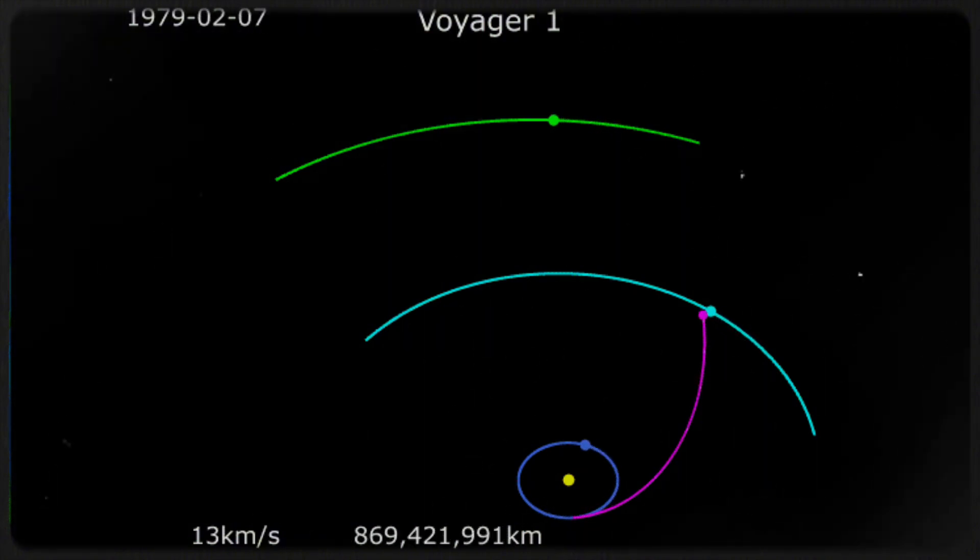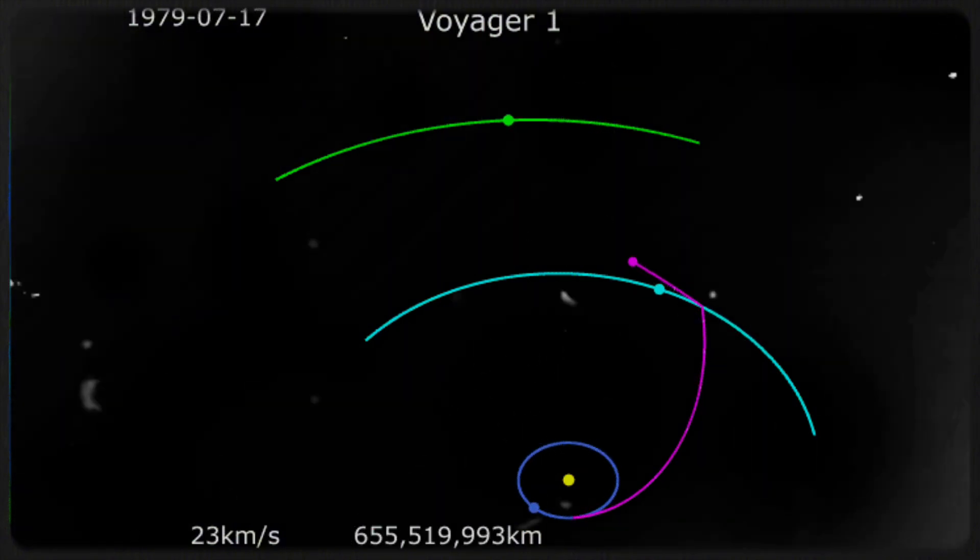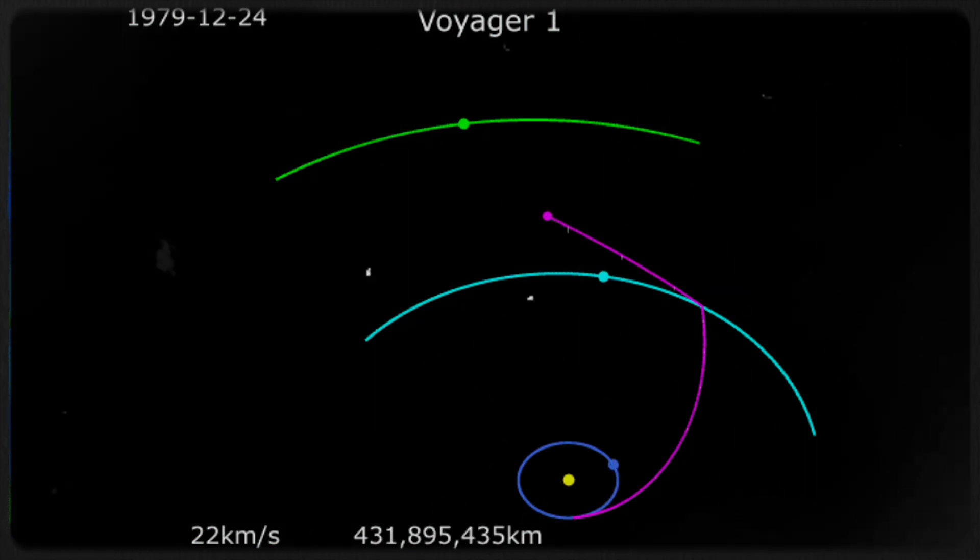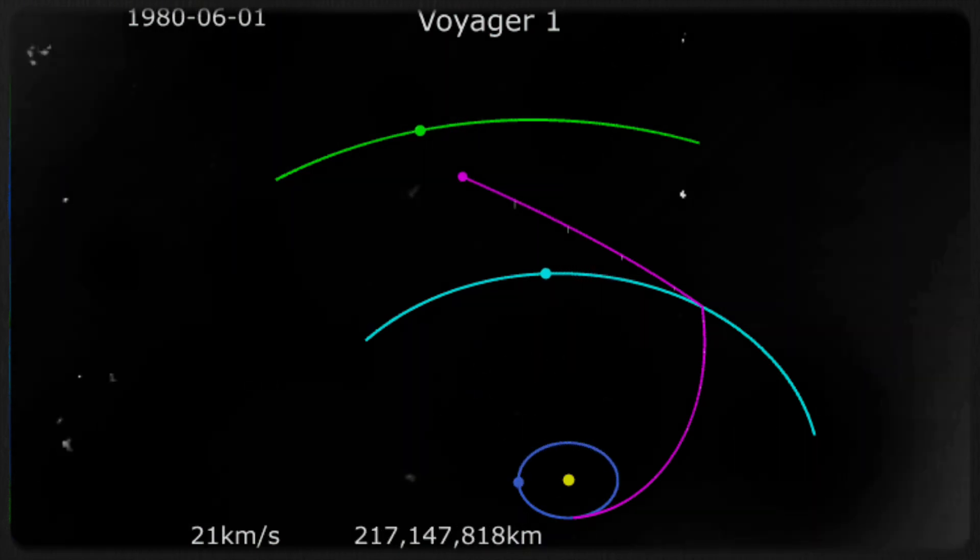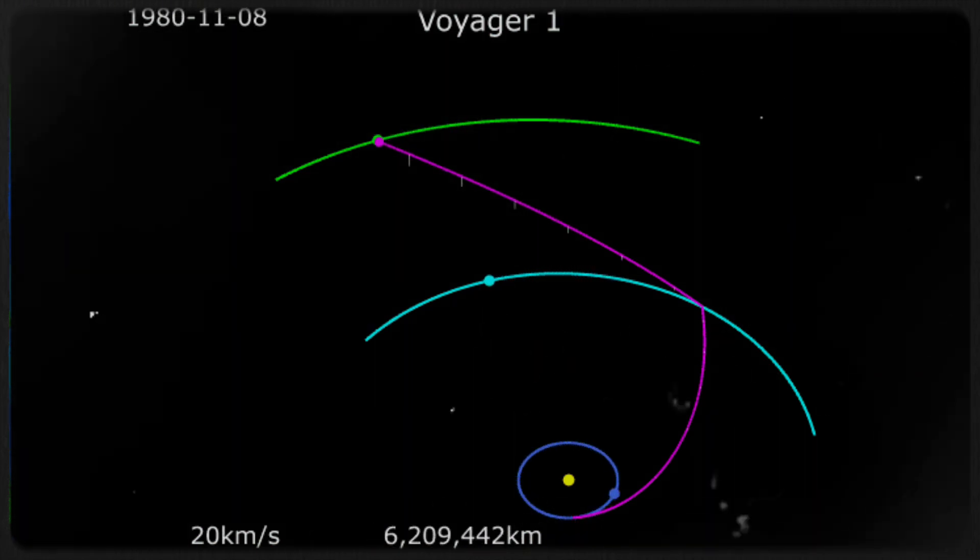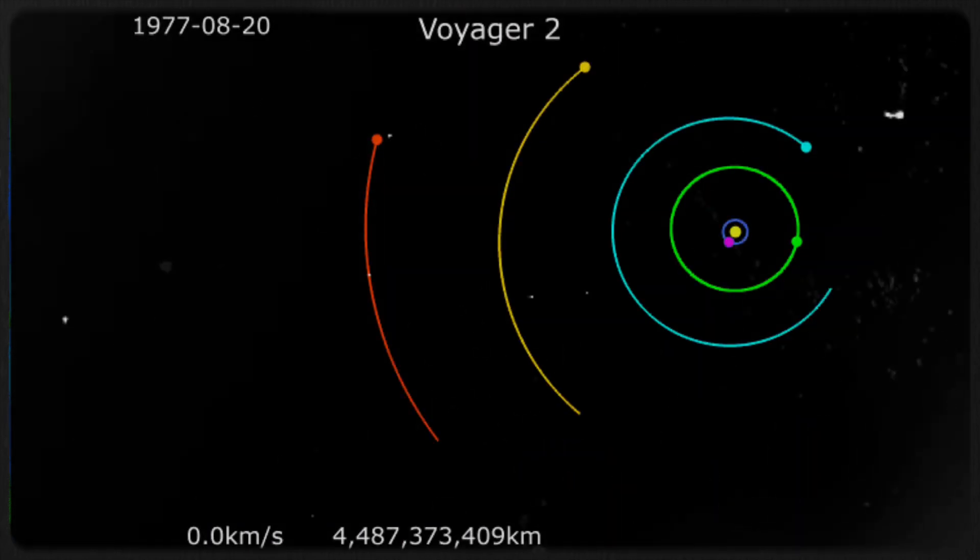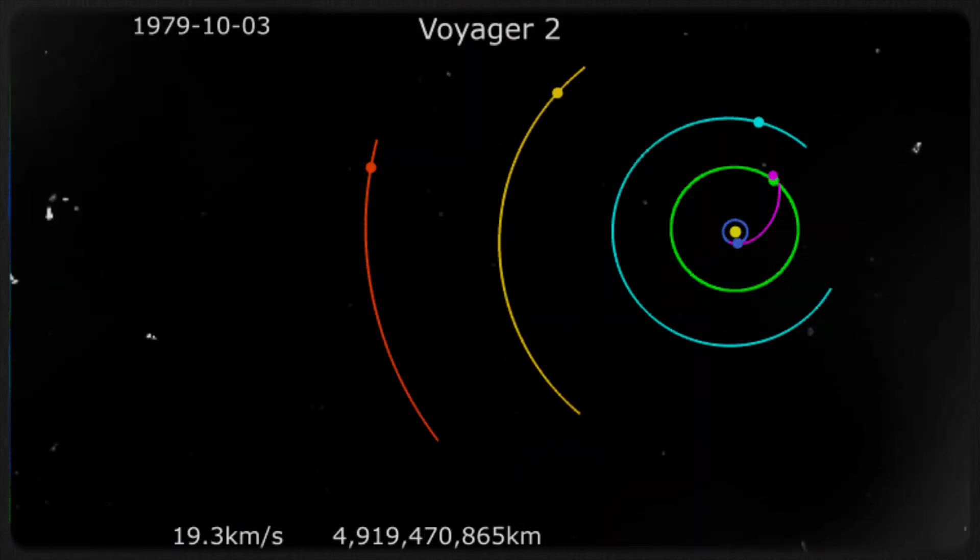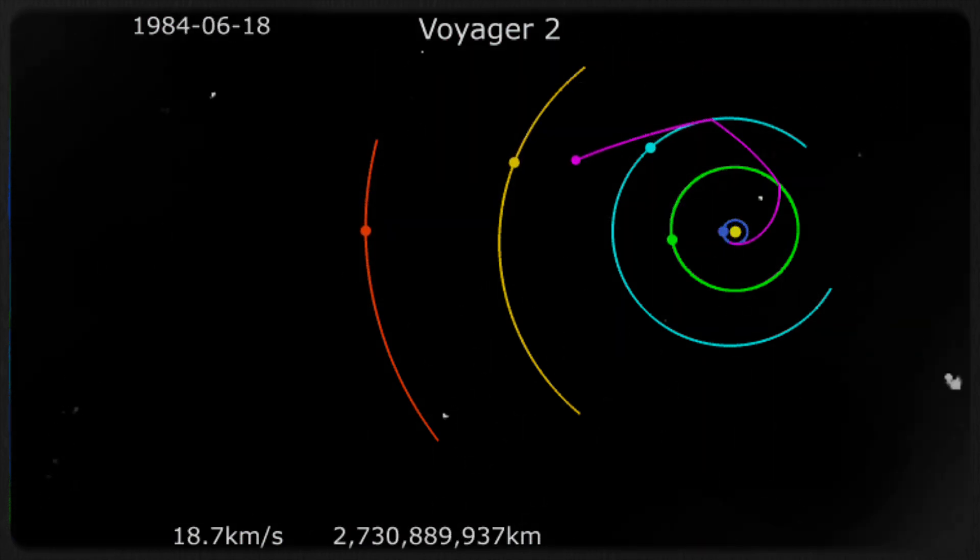This journey was fraught with risks, including the very real danger of the spacecraft becoming lost in the vastness of space. The contributions of these probes have been monumental in expanding our understanding of space. Both Voyager 1 and Voyager 2 have provided invaluable data and images, leaving scientists and NASA engineers in awe.